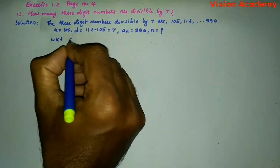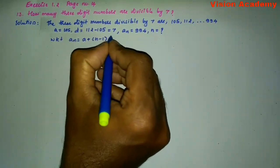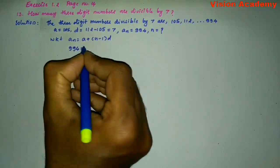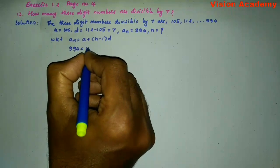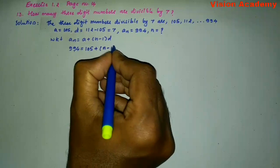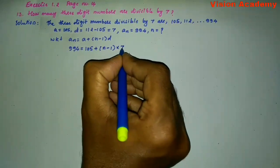We know that An = A + (N - 1)D. Here, 994 = 105 + (N - 1) × 7.